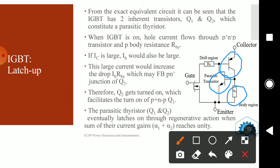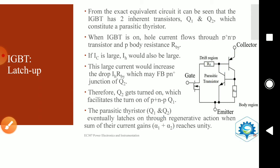The thyristor will get latched on or turned on due to regenerative action. It will get turned on when the sum of the current gains of the two transistors Q1 and Q2 reaches unity. The thyristor is a combination of two transistors, and when the sum of the current gains reaches unity, the thyristor gets turned on. The same situation is happening within the IGBT.